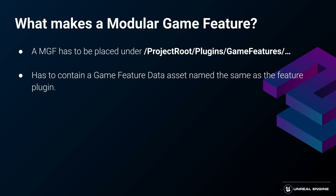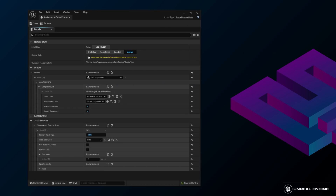Game features are based on a new type of plugin. To become a game feature, a plugin should be placed in the plugins/GameFeatures directory under your project root and contain a description file based on the game feature data struct. The description file, or the game feature data asset, is the heart of a game feature. It defines what game feature actions should be performed when the feature is activated and what primary asset types to register to the asset manager.